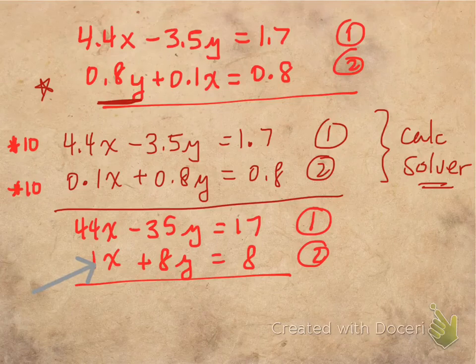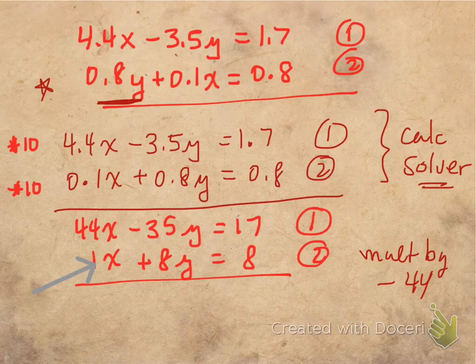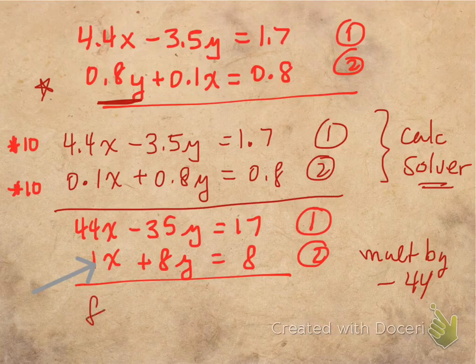And so we'll do that by multiplying everything in equation 2 by negative 44. We'll end up with negative 44x minus negative 44 times 8y is equal to 8 times negative 44. And now you can go through and I'm going to let you finish the problem from here.